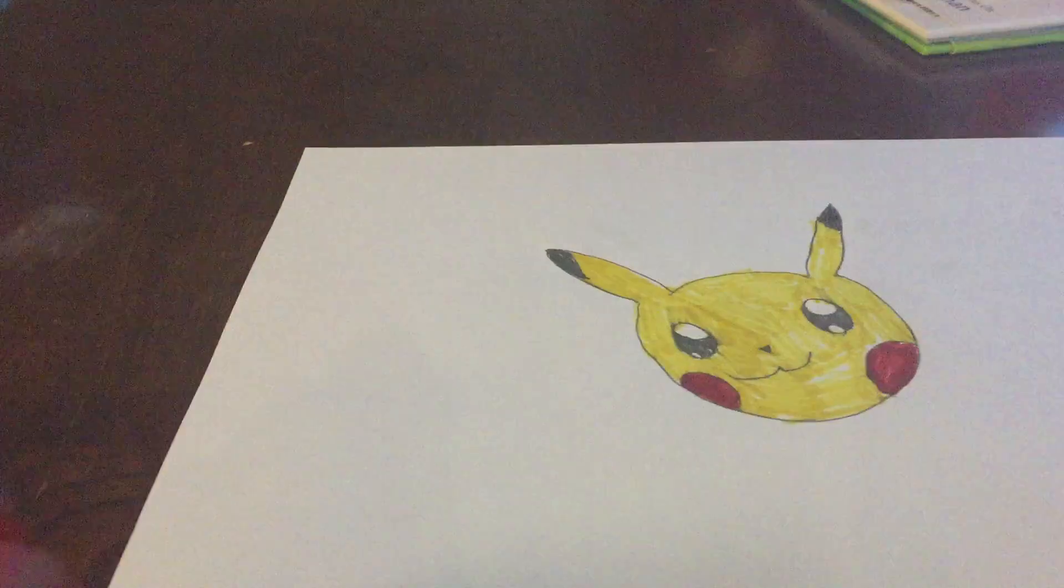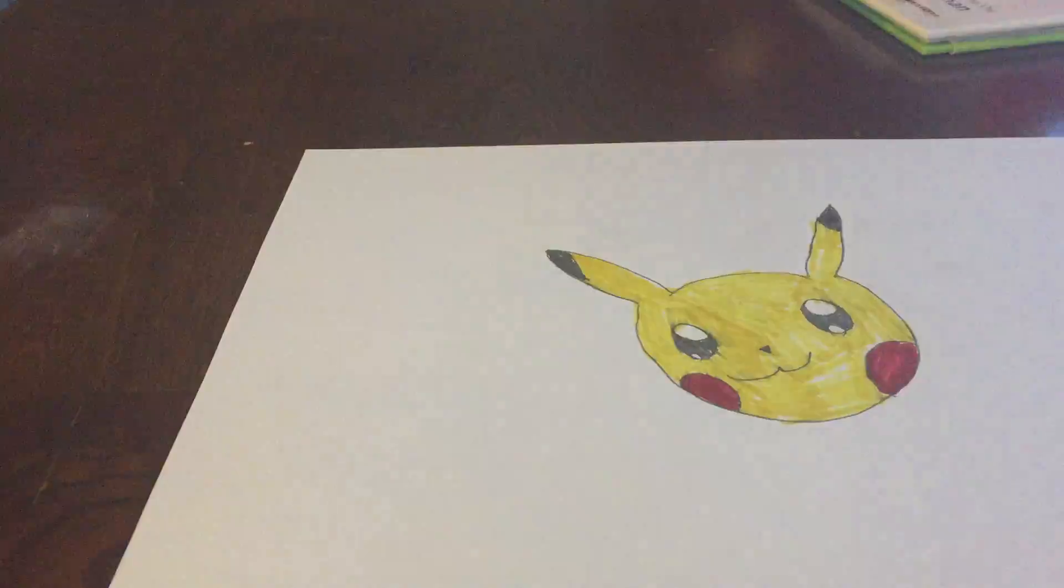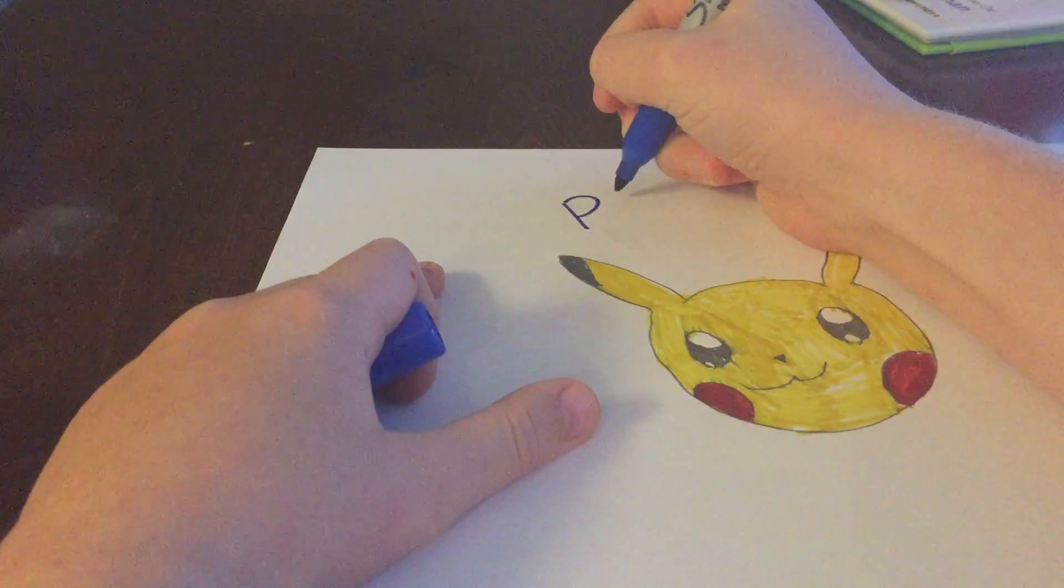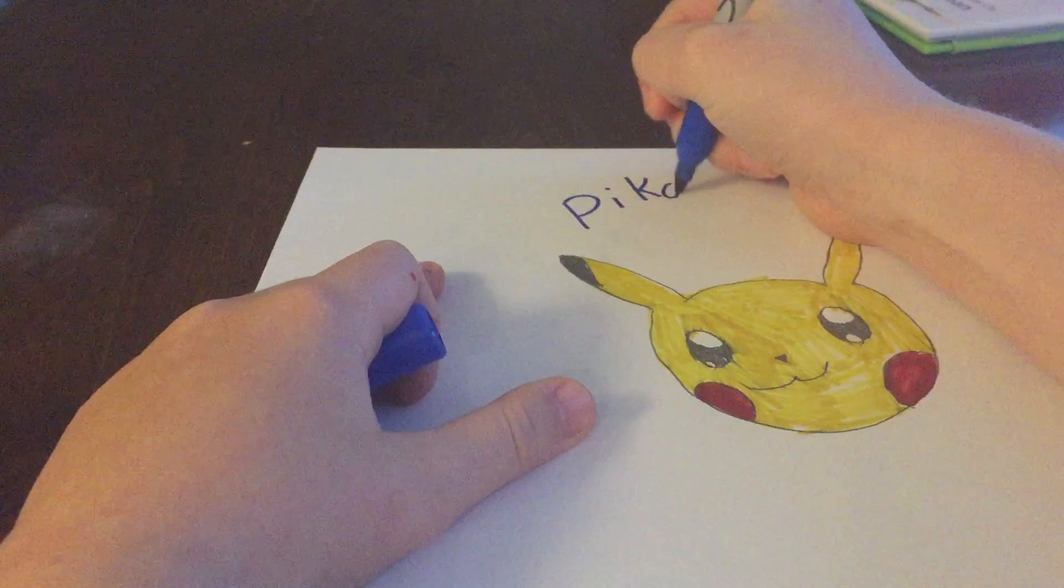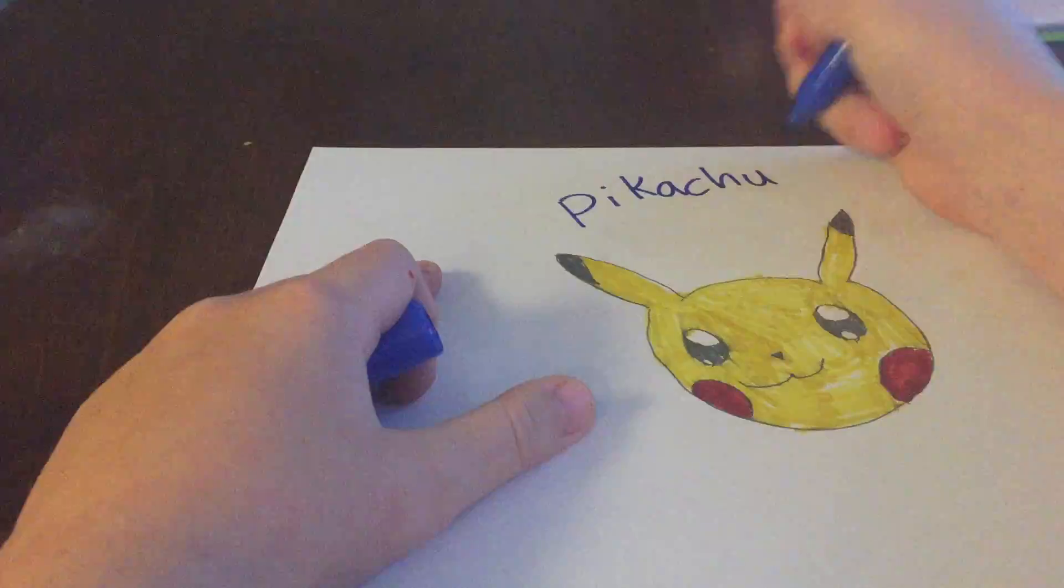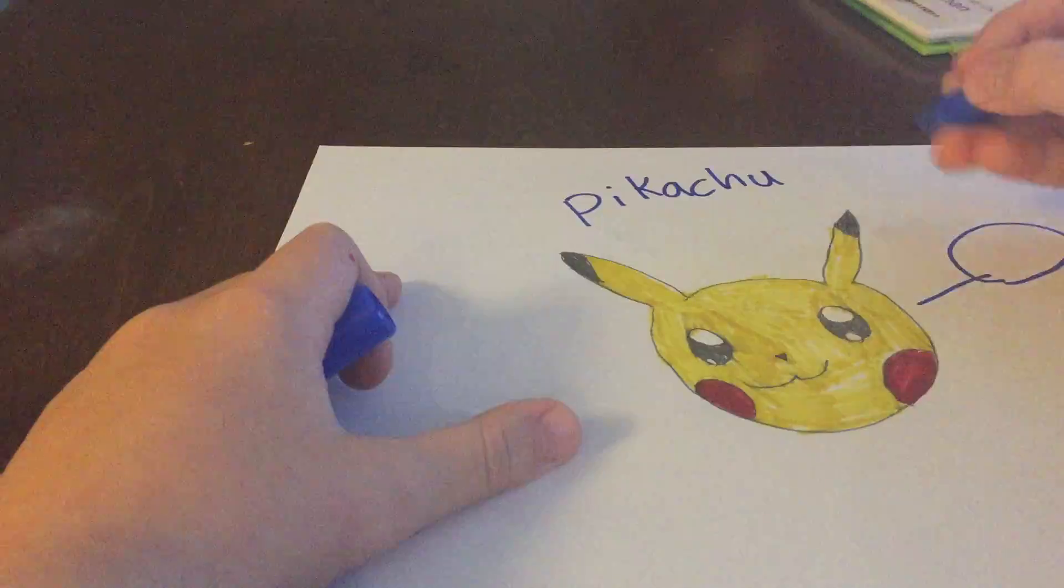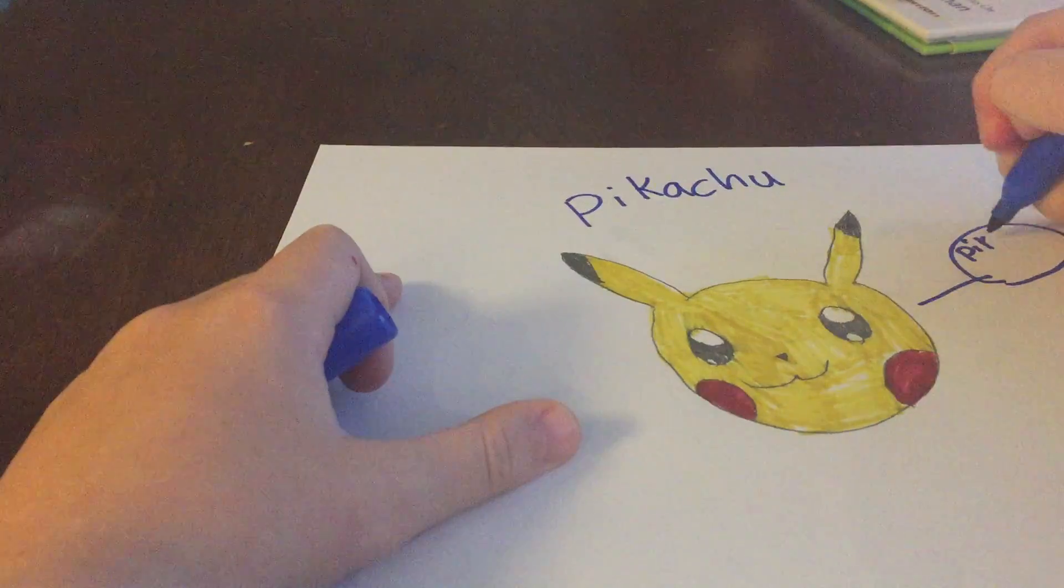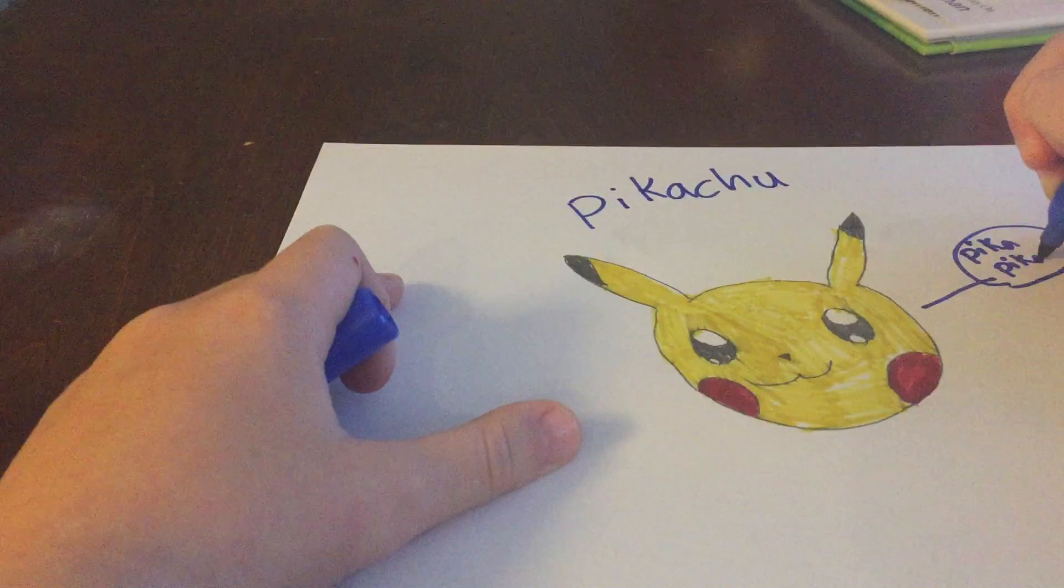There's here is your Pikachu. Thank you for watching my video. I'm gonna write his name: Pikachu. Then I'm gonna make him have a little speech bubble and make him say Pika Pika.